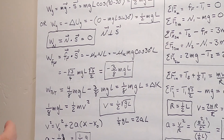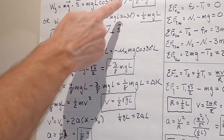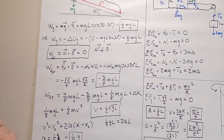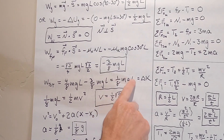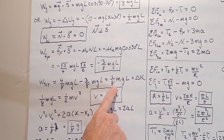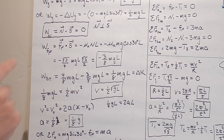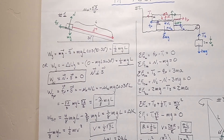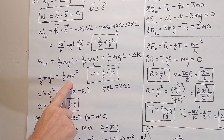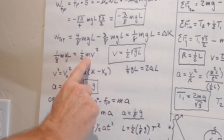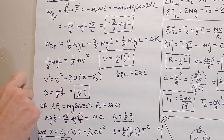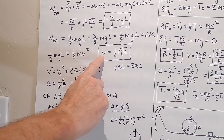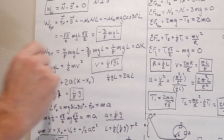Now we can get the total work. I just sum these three up. That's 4/8, and friction is minus 3/8, so the total work is 1/8 mgl. That equals the change in kinetic energy, which is the final kinetic minus zero because it started from rest. So we just have total work equals change in kinetic, cancel the m's, cancel the 2, and take the square root of both sides. The velocity at the bottom is one half times the square root of gl.